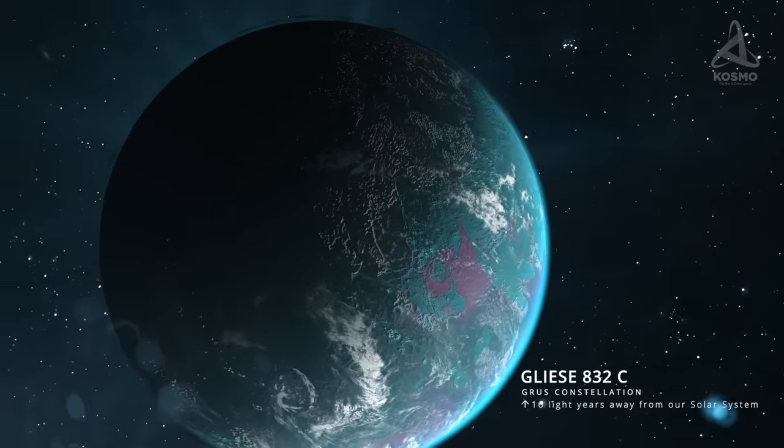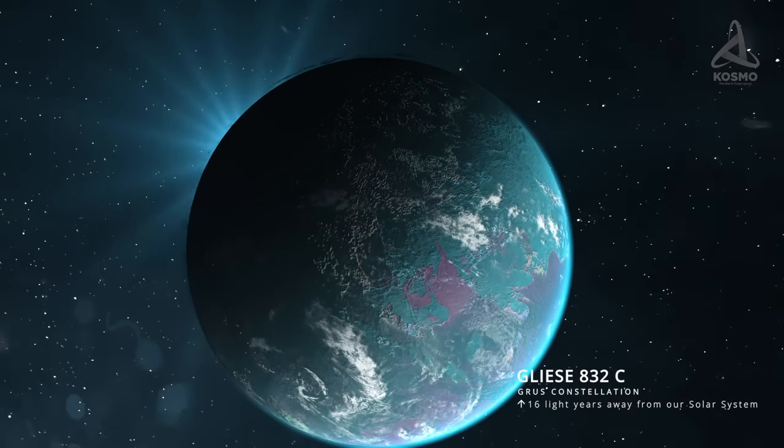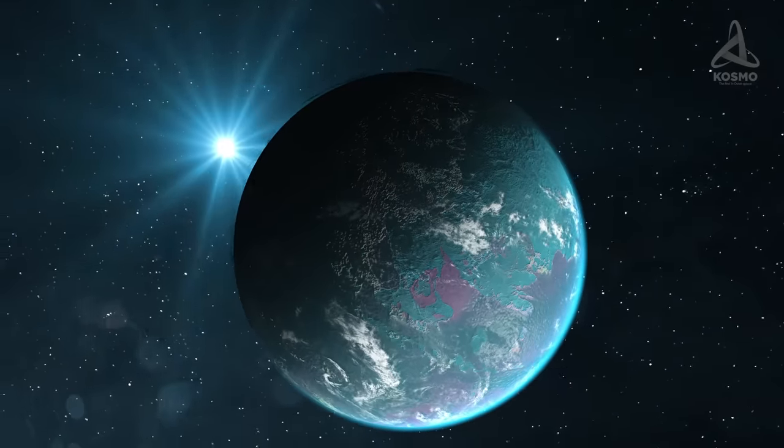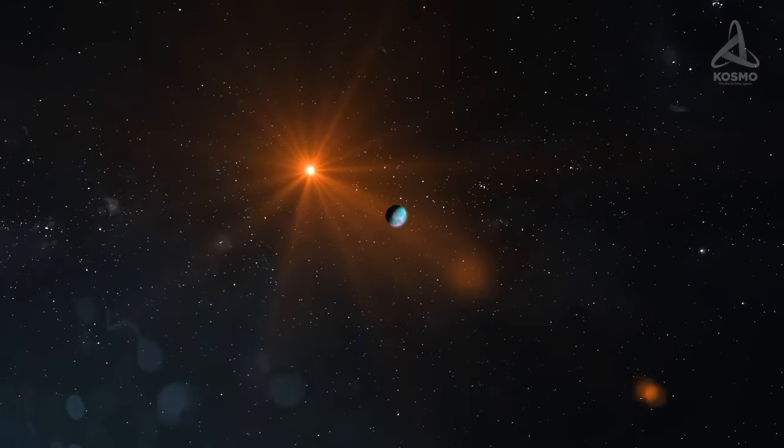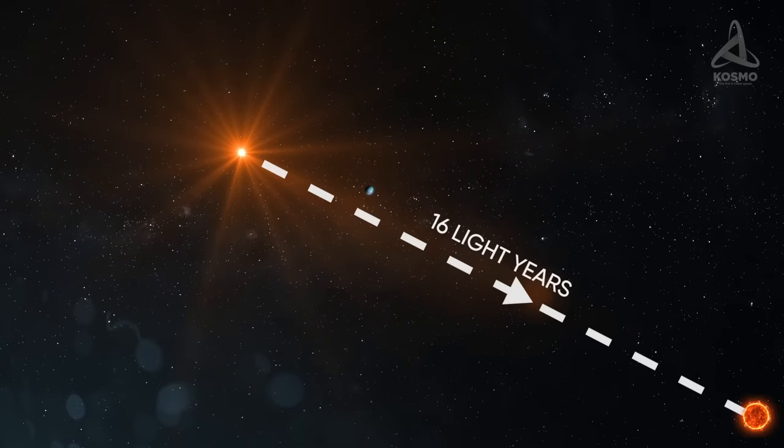In fact, this exoplanet is one of the most likely places where alien life forms will eventually be detected. This exoplanet orbits a star called Gliese 832, which lies 16 light-years away from the Sun and is part of the Grus constellation.